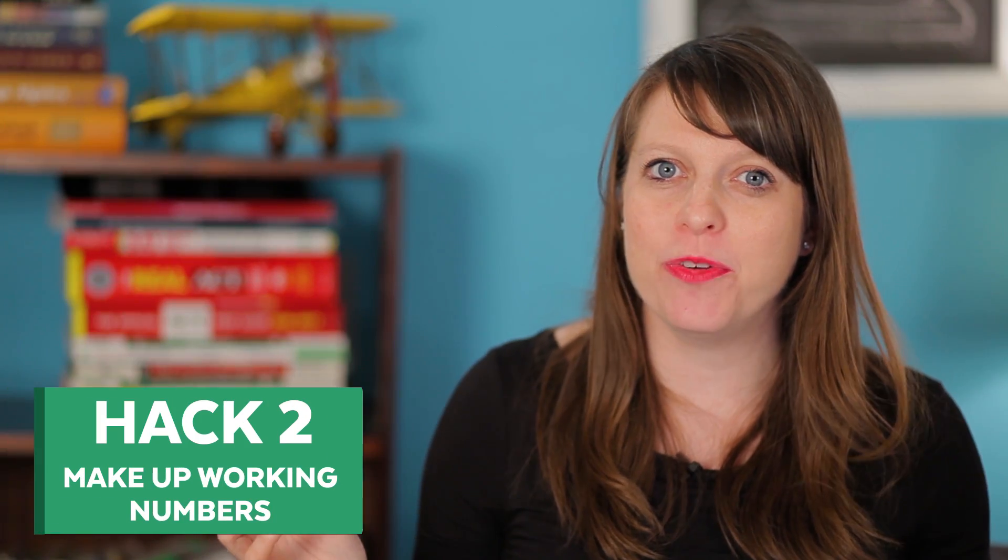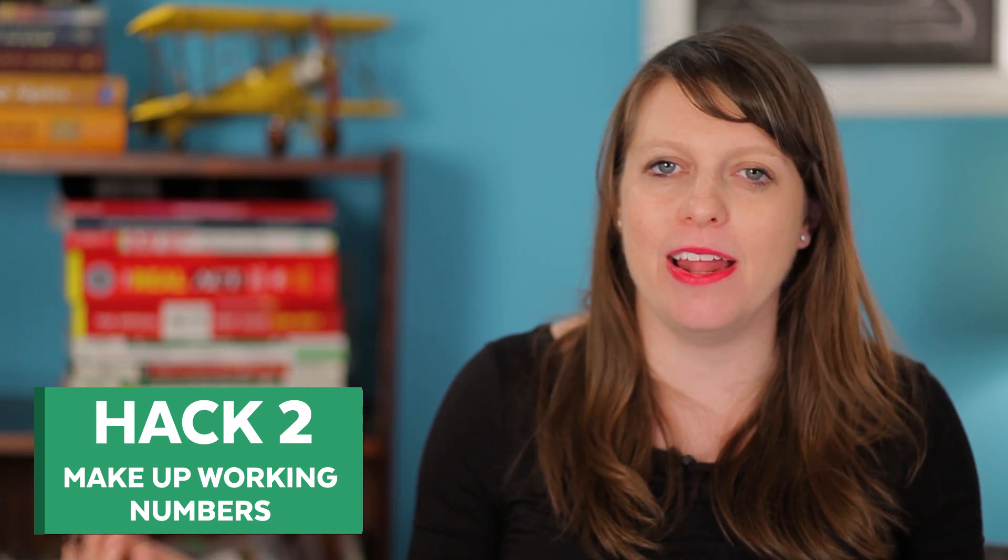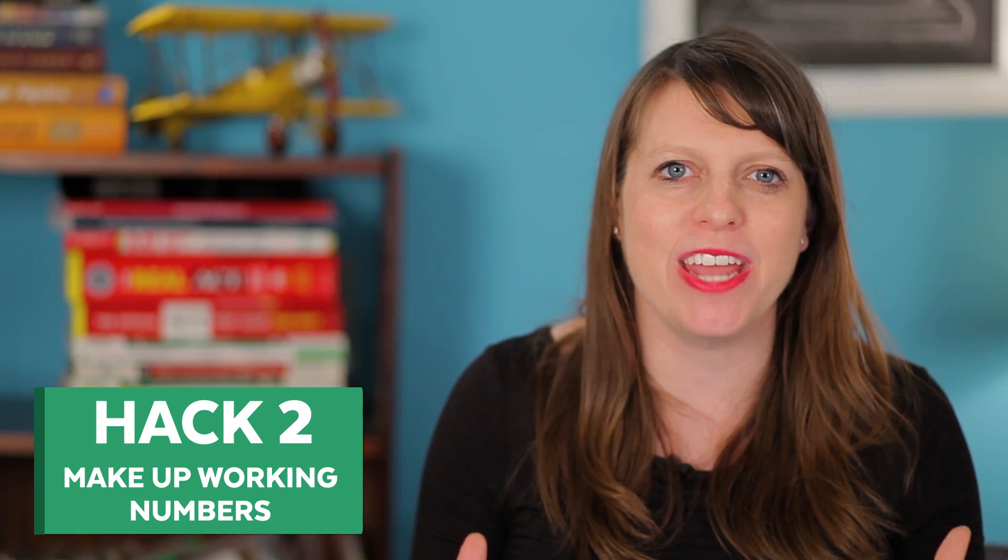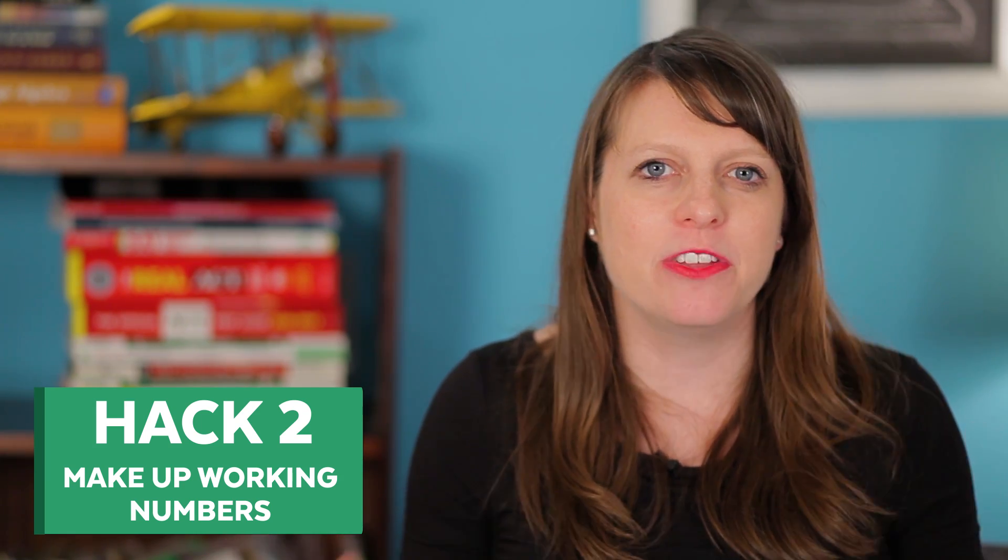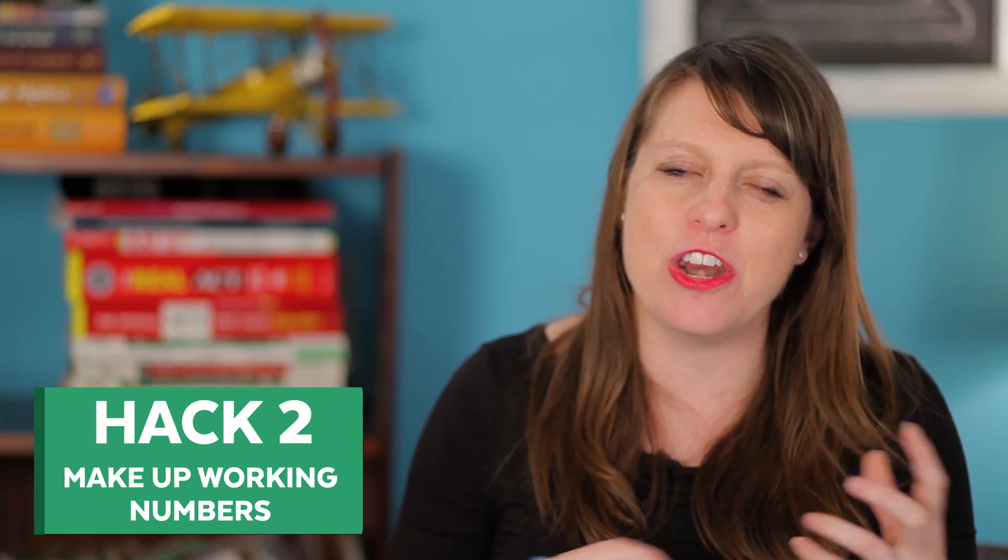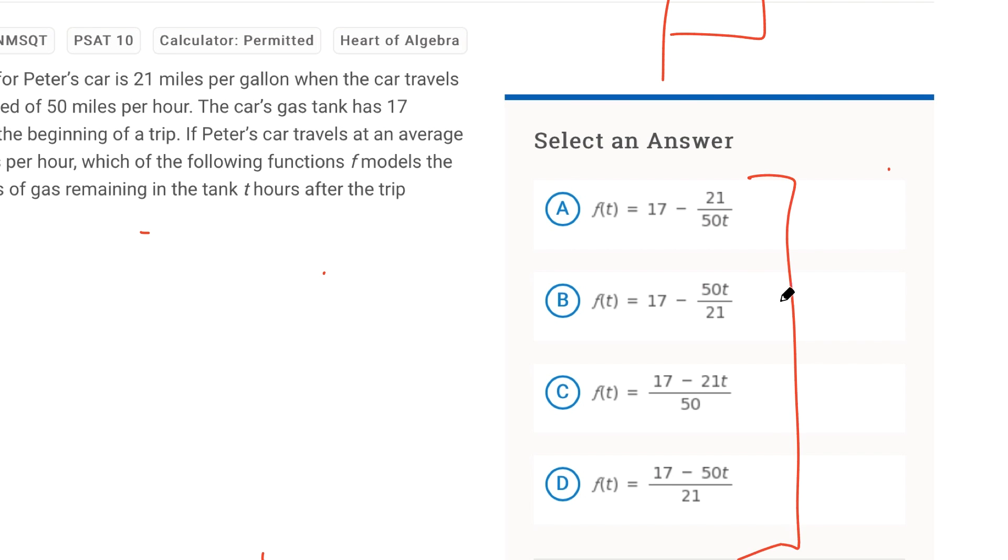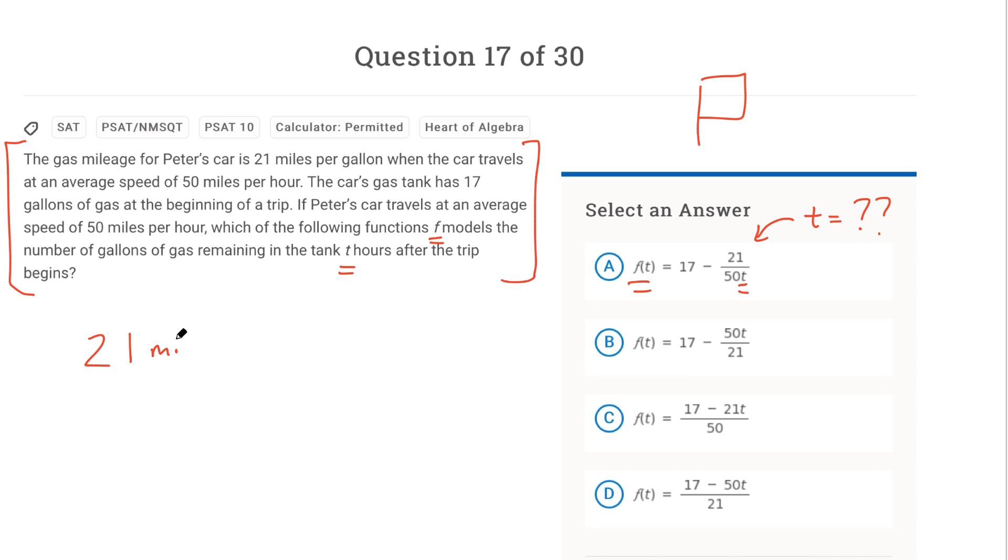My next math hack is another classic tutor hack, which is make up numbers. When you don't know how to do a problem, or even if you do know how to do a problem, a lot of times a way to build clarity or way to figure out how all those numbers work together is to make up hypothetical numbers and plug those into the situation so that you can kind of play with things and know how everything is set up. This works particularly well whenever you have variables in the answer choices. Here's how this goes. The gas mileage for Peter's car is 21 miles per gallon when the car travels at an average speed of 50 miles per hour. The car's gas tank has 17 gallons of gas at the beginning of a trip.